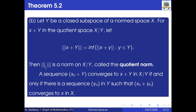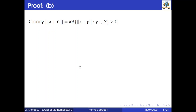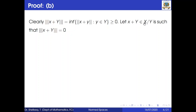Proof of part B. Clearly, by definition, the quotient norm of x + Y equals the infimum of the set {‖x + y‖ : y ∈ Y}, which is greater than or equal to 0, by the definition of norm. Now suppose the quotient norm of x + Y equals 0.